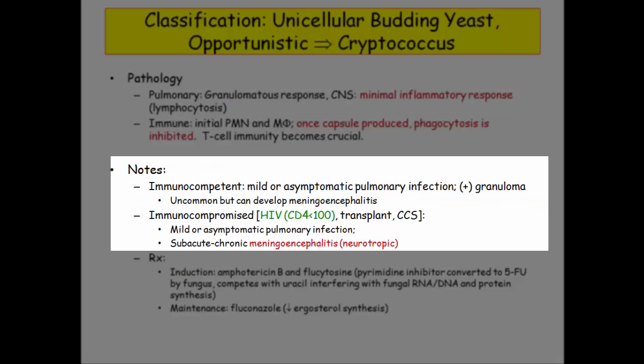It will disseminate to the CNS. As you are immunocompromised, the CSF shows only a minimal inflammatory response characterized by lymphocytosis. To be clear, immunocompetent patients may develop CNS involvement, but this is relatively uncommon. Rather, CNS involvement is most typically seen in HIV patients with a CD4 count of less than 100.